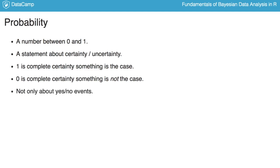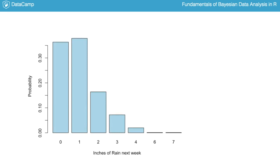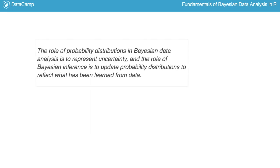Probability does not only have to be about yes-or-no type events, but it can also be used to describe uncertainty over continuous quantities. For example, here is a graph showing the probability over how many inches it will rain next week. Each bar shows the probability for the corresponding outcome, and together the probabilities sum to one. This graph is also an example of a probability distribution, which is just an allocation of probability over many mutually exclusive outcomes. The role of probability distributions in Bayesian data analysis is to represent uncertainty, and the role of Bayesian inference is to update these probability distributions to reflect what has been learned from data.